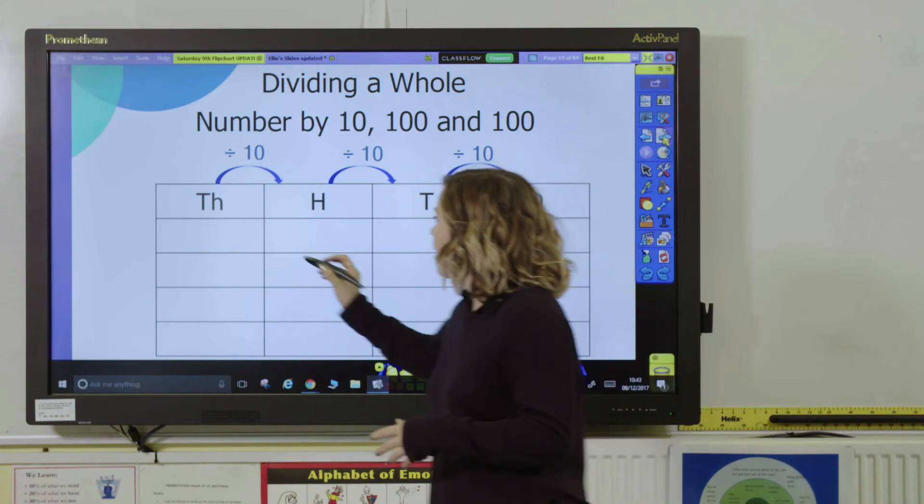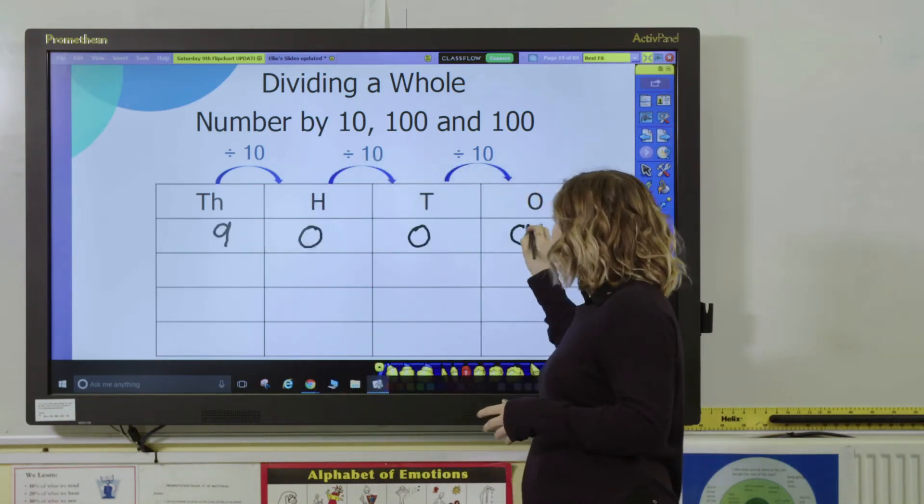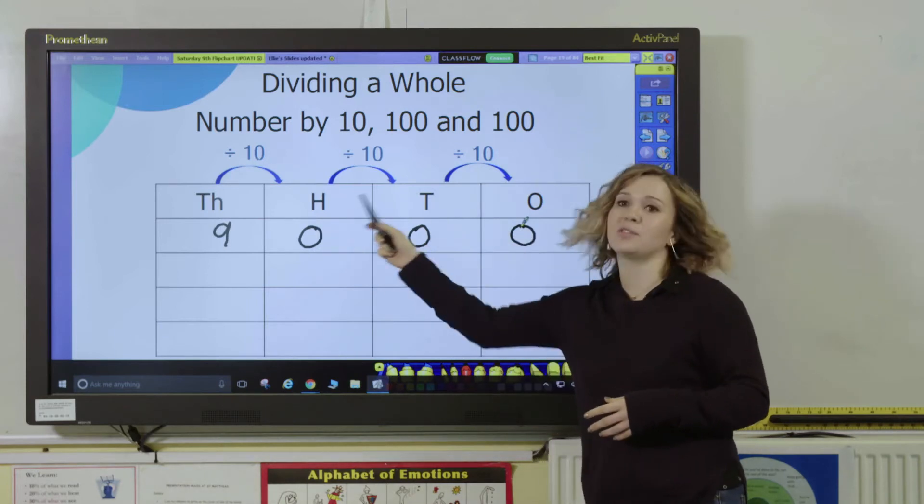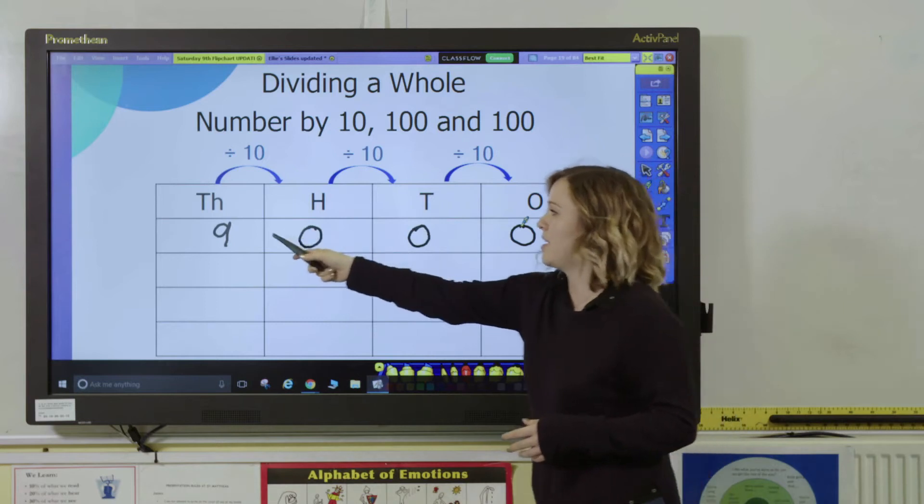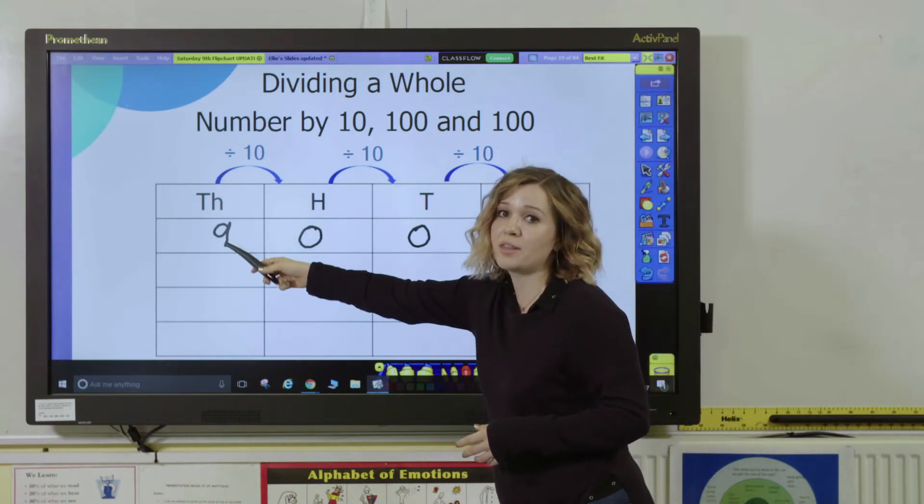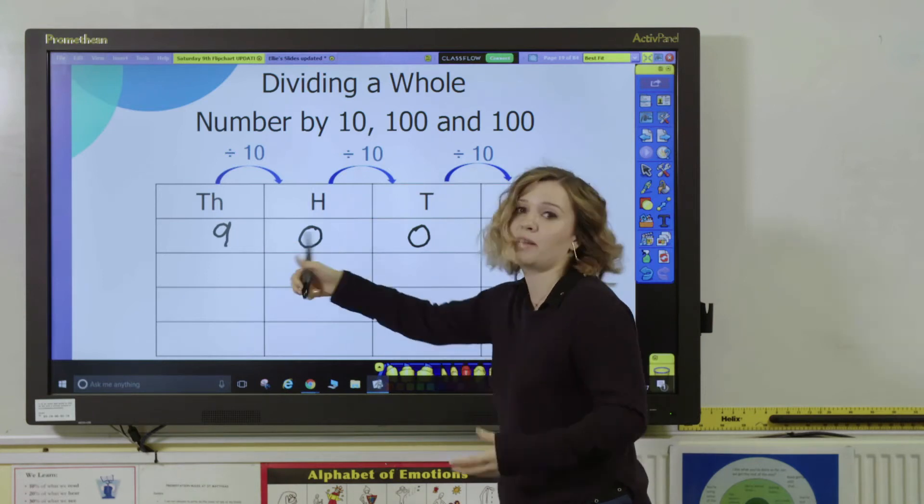So let's begin with the number 9,000. Before you get the pupils to divide it, you might just want to recap the value of each of those digits so that they understand that this 9 here represents 9,000. Again, you could use your base 10 to help represent the size of that number.